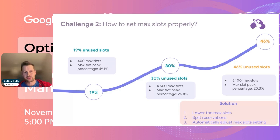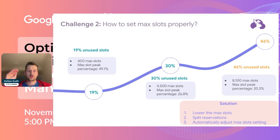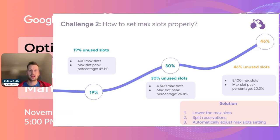Sometimes splitting by project can be a bit more tricky from a technical perspective. The third solution is that you can automatically adjust the maximum slot setting — changing it throughout the day if you know what your slot needs are at different times.